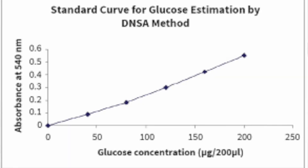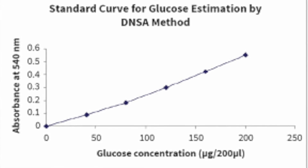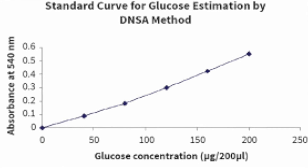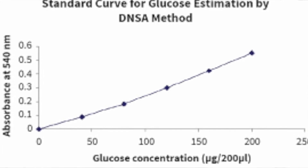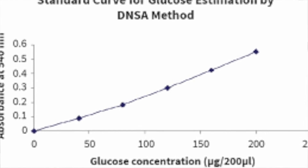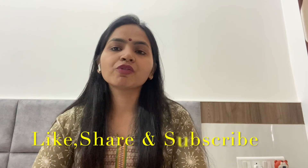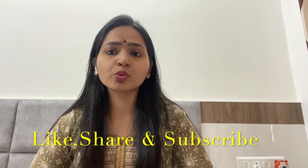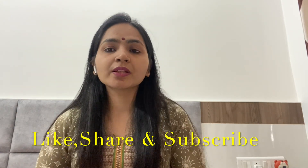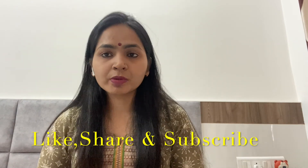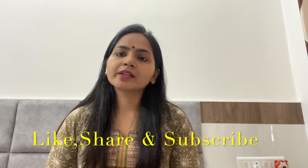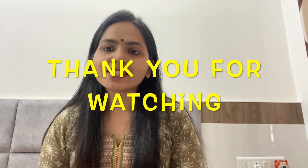Set the spectrophotometer to zero against the blank, then take OD readings of your standards and unknown sample. Plot a standard calibration curve of absorbance versus glucose concentration — a straight line should result if done properly without errors. Using this graph, you can trace the concentration of your unknown sample. This is how the DNS method is performed for reducing sugar estimation. If you have any queries, ask in the comments. Please subscribe, hit the like button, and share. Stay tuned and stay safe — thank you!